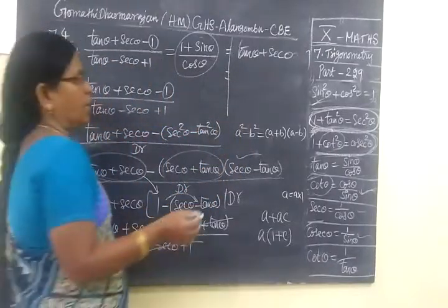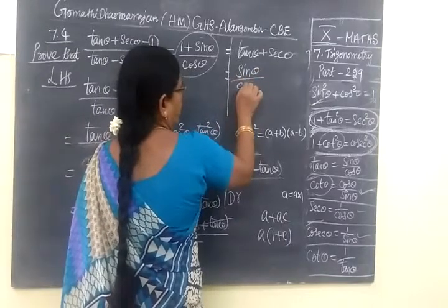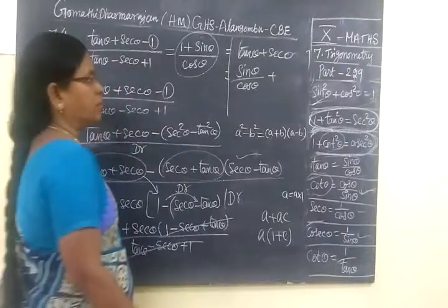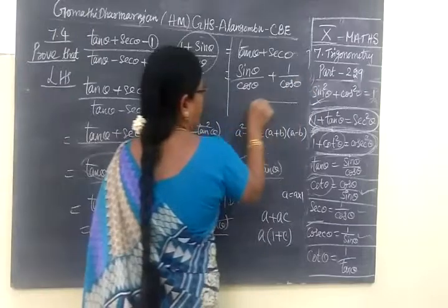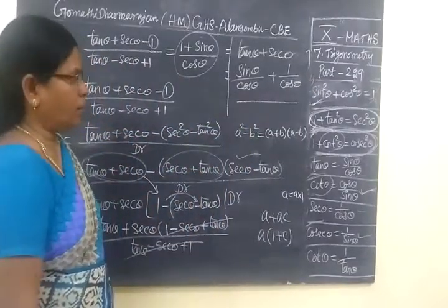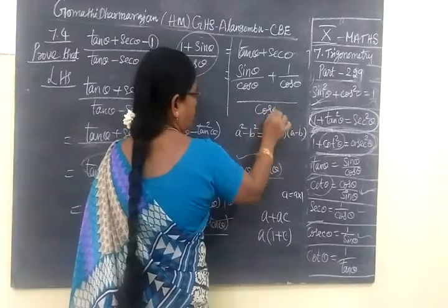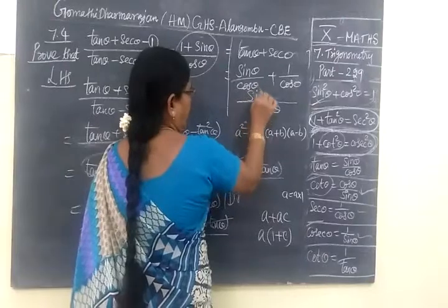Tan θ is sin θ by cos θ. Sec θ is 1 by cos θ. Denominator same. So we write the first line, put it, and then cos.